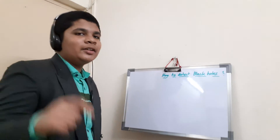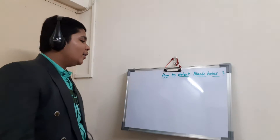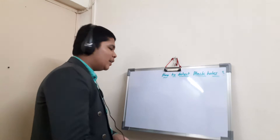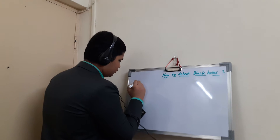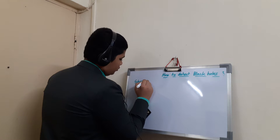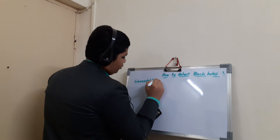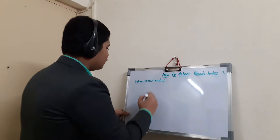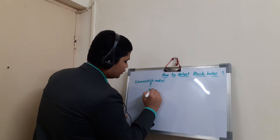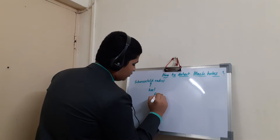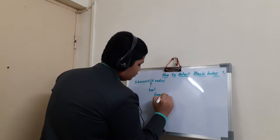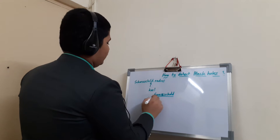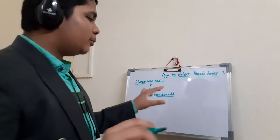So that is because of the black holes. At the surface of the black hole, what we call it is the Schwarzschild radius — I am writing the spelling: Schwarzschild radius. This is the Schwarzschild radius, which was defined in relation to the black hole by physicist Karl Schwarzschild.